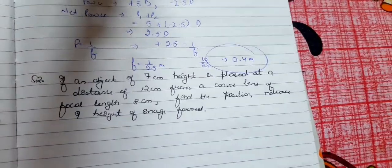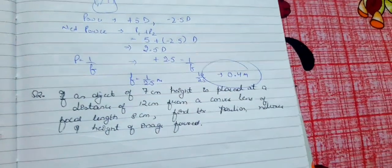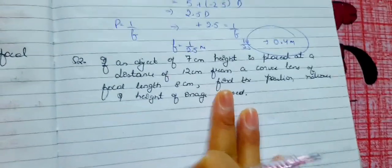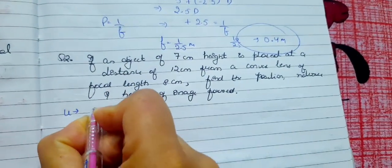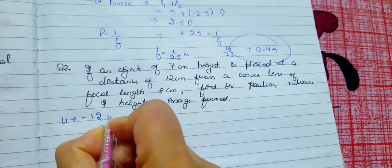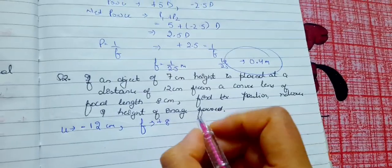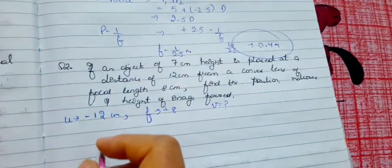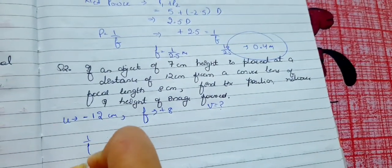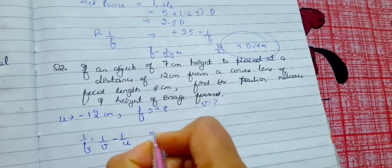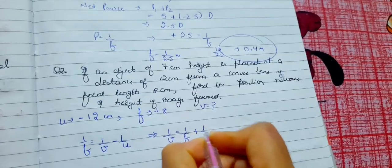Second question: if an object of 7 cm height is placed at a distance of 12 cm from a convex lens of focal length 8 cm, find the position, nature and height of the image formed. We have u = -12 cm (always negative), f = +8 cm (convex lens). We need to find image distance v. According to the lens formula: 1/f = 1/v - 1/u, so 1/v = 1/f + 1/u.